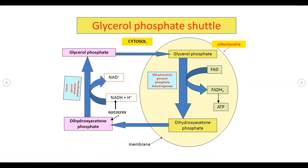Glycolysis में हमने देखा था कि उसमें 8 या 6 ATP की production होती है। अगर malate-aspartate shuttle system operate होता है तो वहाँ पर 8 ATP बनेंगी, और अगर glycerol phosphate shuttle होता है तो 6 ATP की production होती है।